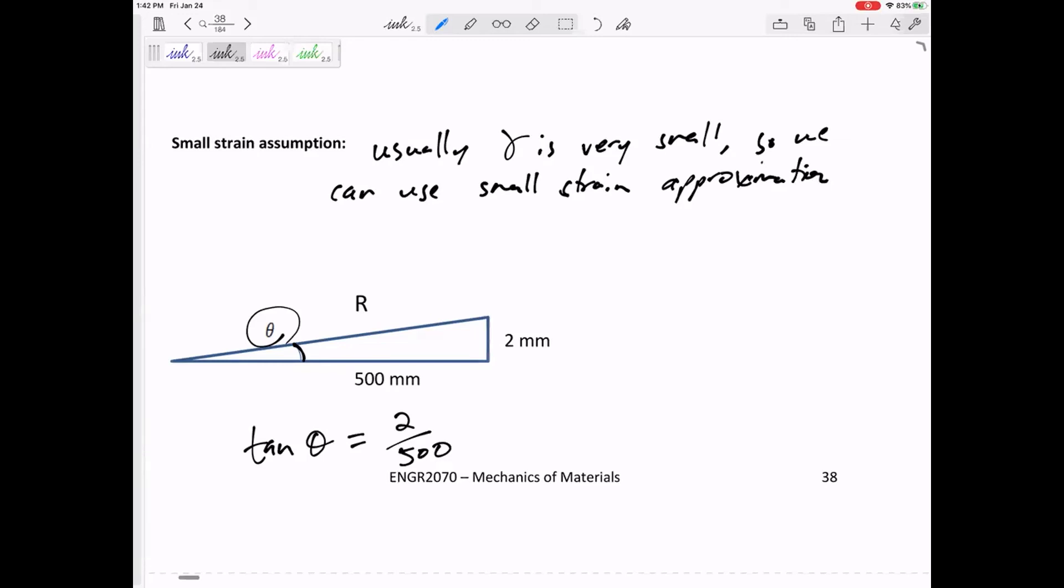But for a fraction like 2 over 500, sine of theta is approximately equal to theta. Cosine of theta is approximately equal to 1. And this is what we're going to use. Tangent of theta is approximately equal to theta if we're in radians. If we're in radians, which is a good thing. We are in radians. We want to be in radians.